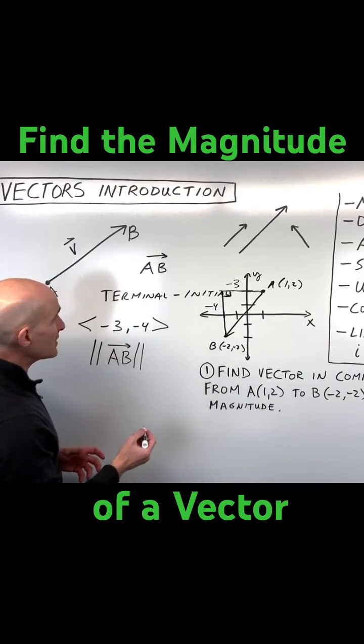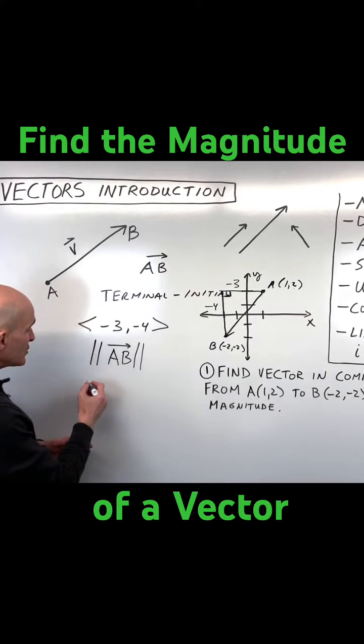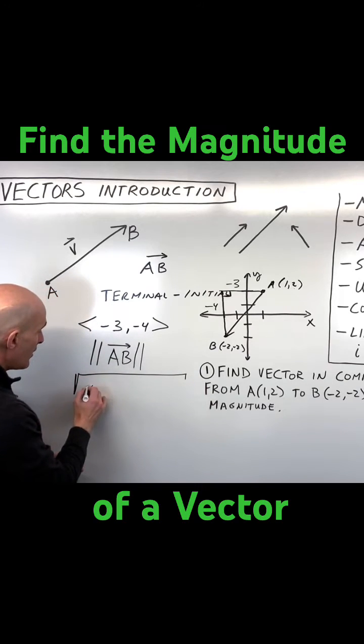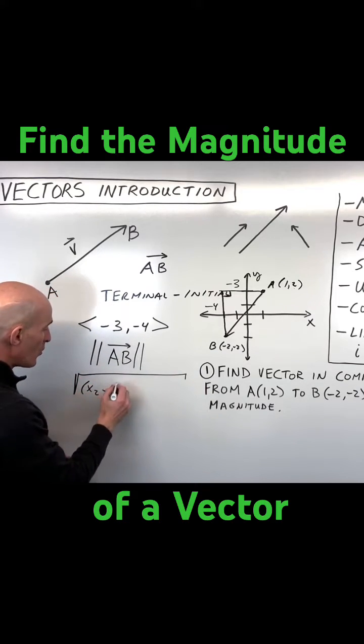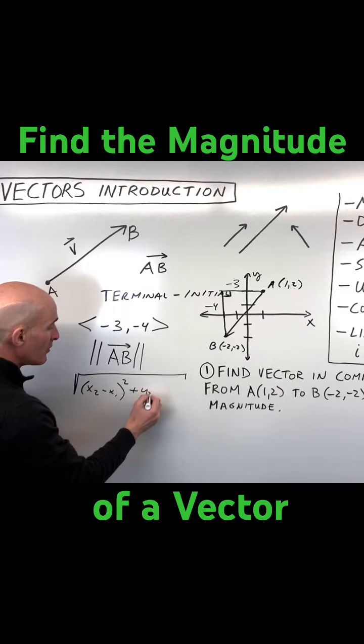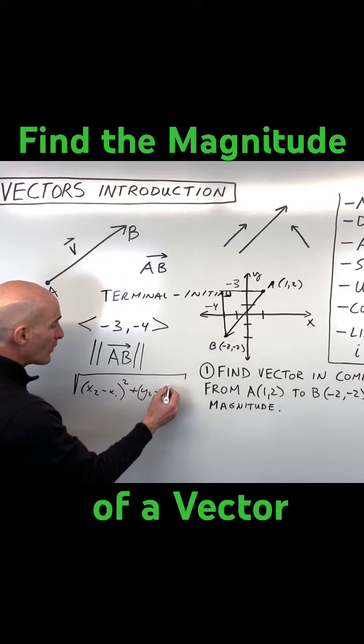Now, oftentimes how this is written, if you want a formula, is you would go like this. You would say the magnitude is the square root of x2 minus x1 squared plus y2 minus y1 squared.